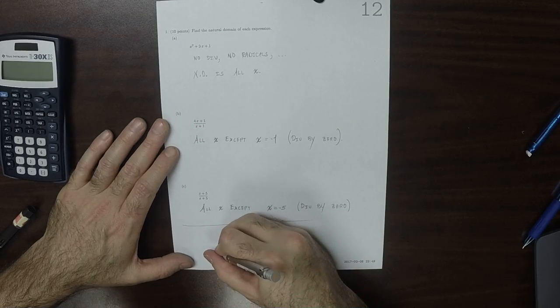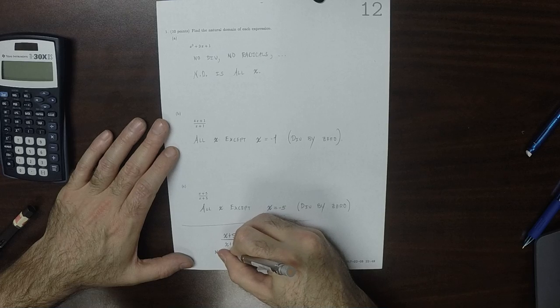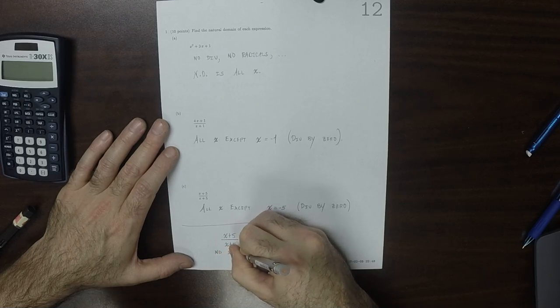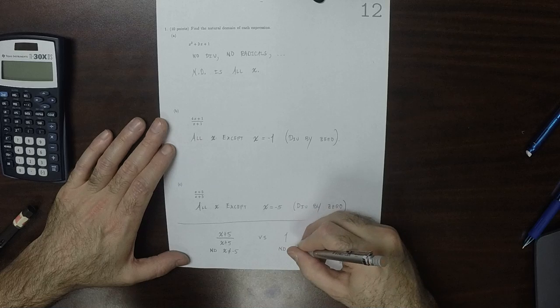this has natural domain x not negative 5, whereas this has natural domain all x.